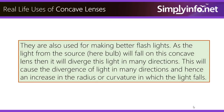They are also used for making better flashlights. The light from the source — the bulb — falls on the concave lens, which then diverges the light in many directions. This causes divergence of light and increases the radius of curvature in which the light falls.